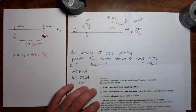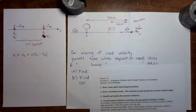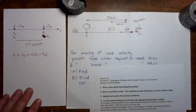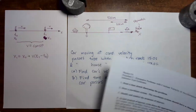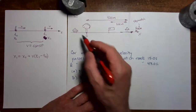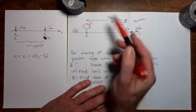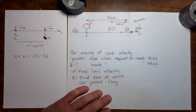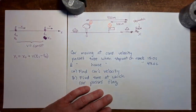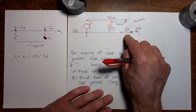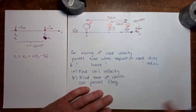Step three is to identify the moments of interest — those moments where something significant happens that will play a role in our analysis. There are three moments of interest here. Moment 0 is when the car passes the tree. Moment 1 is when the car passes the flag. Moment 2 is when the car passes the house. There are no moments of interest after that.